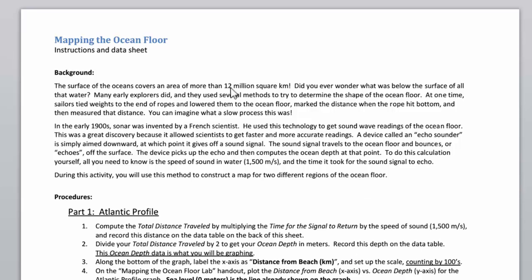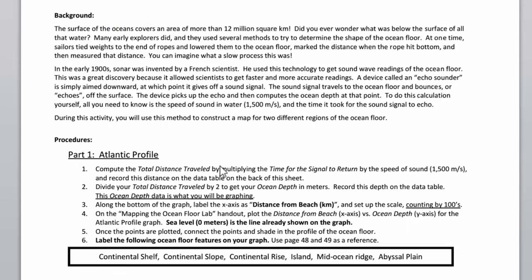The background section describes how we used to determine ocean depth and how we switched to sonar back in the 1900s, especially for World War II, looking for submarines using echo sounders. Knowing the speed of sound in water, which we discovered back in the 1800s, we were able to come up with technologies to actually utilize that.